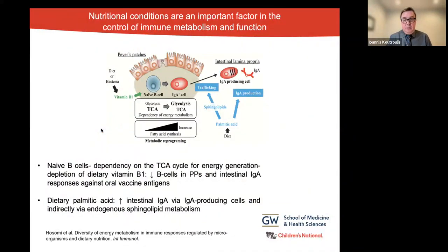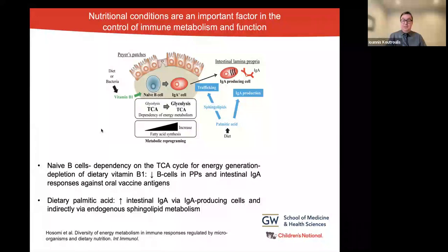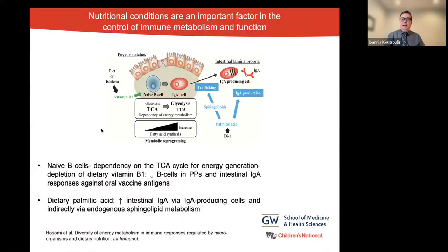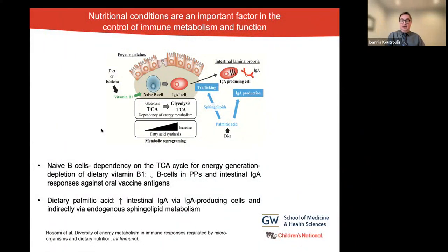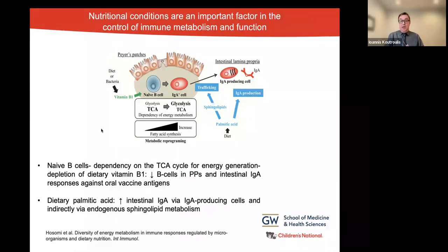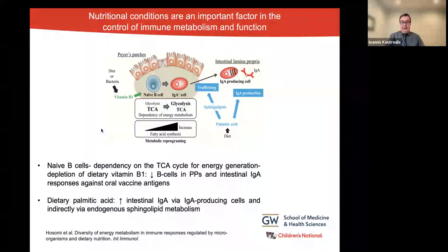Another example that can help us understand the role of dietary nutrition and metabolism in immunity is through the examination of intestinal immunoglobulin A responses. Nutritional conditions are an important factor in the control of immune metabolism and function. As you can see in the graph, naive B cells have a high dependency on the TCA cycle for energy generation. Therefore, depletion of dietary vitamin B1, an essential cofactor in the TCA cycle, results in decreased B cell numbers in the Peyer's patches — lymphoid tissue in the wall of the small intestine — and a reduction of intestinal IgA responses against oral vaccine antigens.